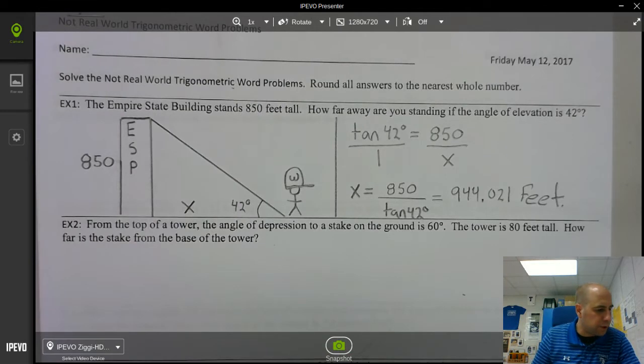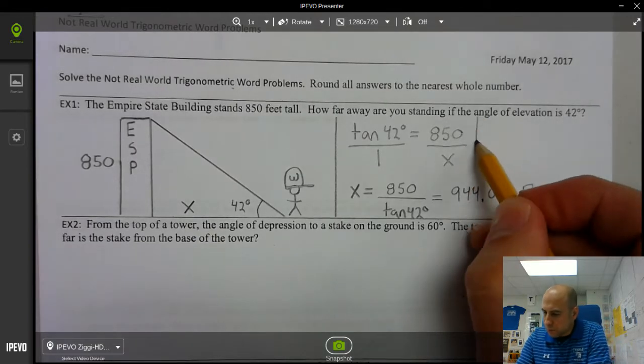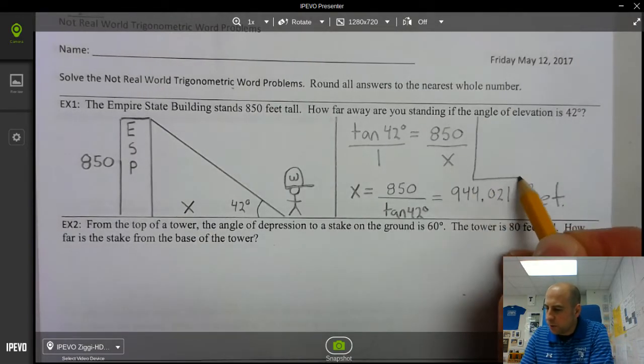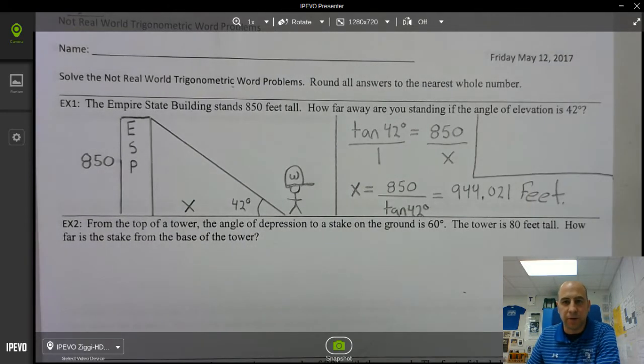Alright and then for step four you'd write a sentence so you would say that you are standing 944.021 feet away from the Empire State building. And then you can just write that here. I'm not going to write it in the video because I don't want to add more minutes to the video but you can take time to write the sentence there.